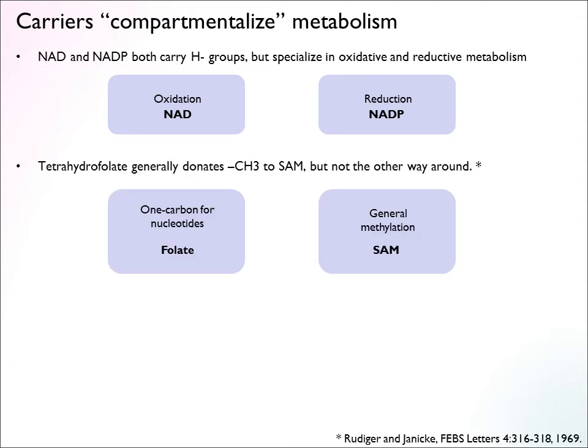There are other examples of this compartmentalization. Folate and SAM are two carriers that both handle one-carbon groups — methyl groups and one-carbon units in other oxidation states — but they specialize. Folate handles one carbon primarily for nucleotide synthesis, whereas SAM also carries methyl groups but uses them for general methylation reactions: methylating proteins, methylating DNA. There is some communication between them, but it's usually one way — folate can donate its group to SAM, but it doesn't go back again — so this separates the compartments.